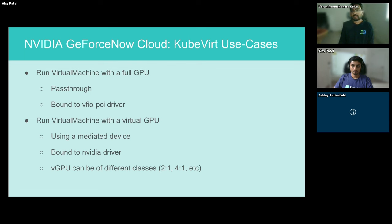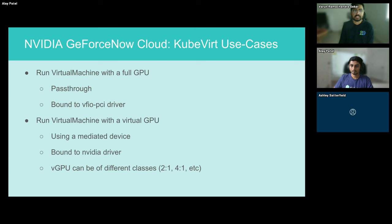At GeForce Now Cloud, we have two primary use cases for running VMs in our cluster. The first is to run a VM with a full GPU, where the VM gets direct access to the GPU while it's bound to the VFIO driver. This gives us maximum performance for our virtual machine.